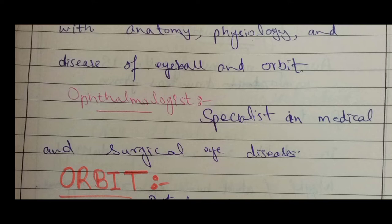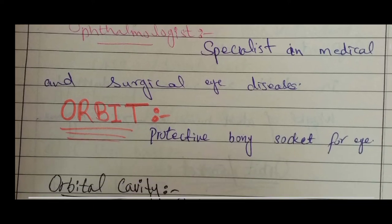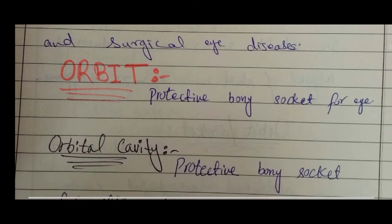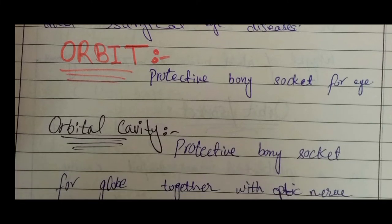An ophthalmologist is a person or doctor who is a specialist in the medical and surgical disorders or pathology of the human eye. The orbit is basically a bony socket where the eyeball is fixed or present — a bony protective socket for the eye.